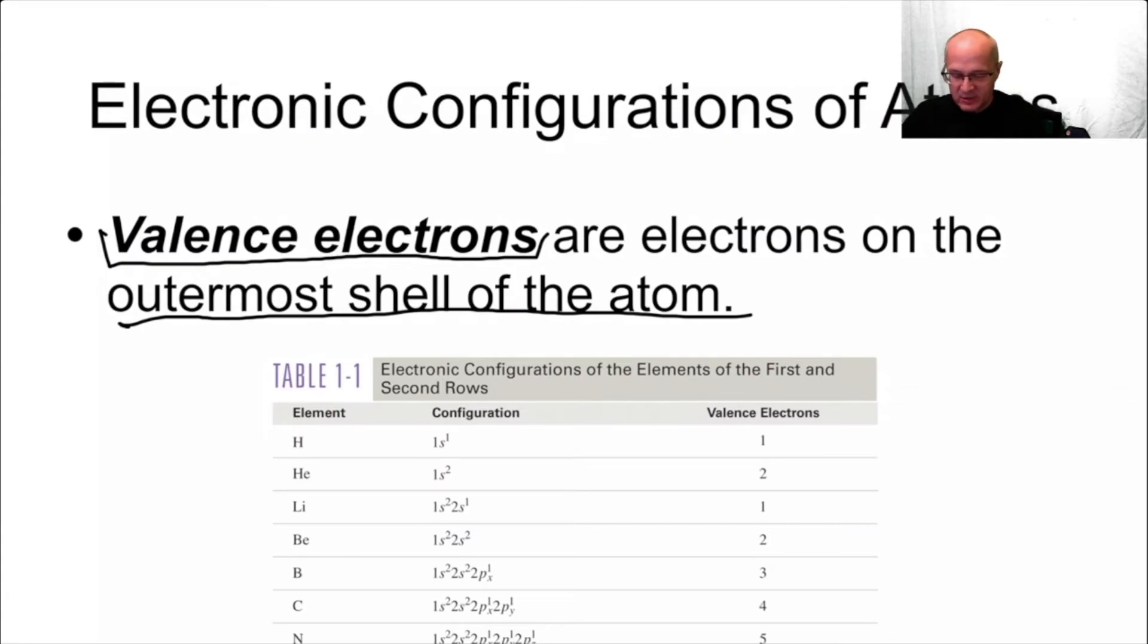Now, here you can see what's called electron configuration. Hydrogen 1s1. Now, if that is not familiar to you, if that is completely foreign to you, you're in a little bit of trouble. You really have to understand the electron configuration very well. It's very simple, but you have to understand it. And this class is not going to go into it. I assume you already know it.